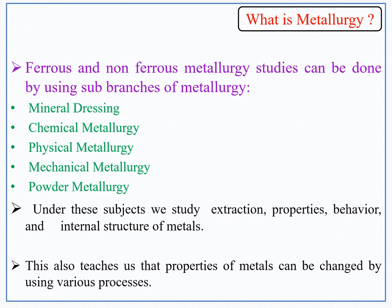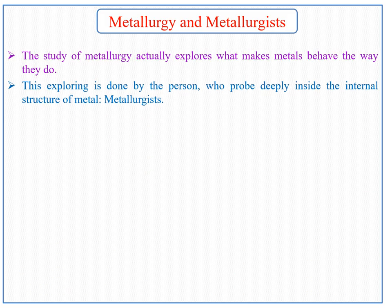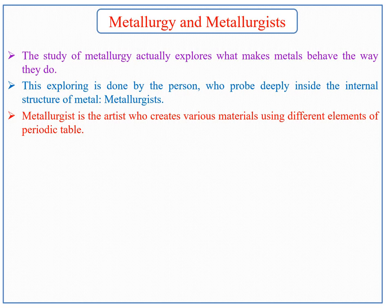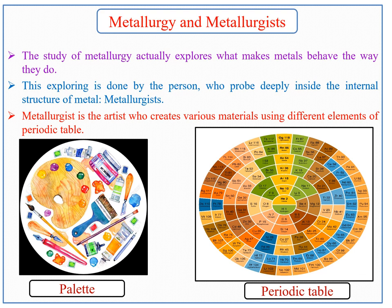These subjects also teach us that properties of metals can be changed using various processes. The study of metallurgy explores what makes metals behave the way they do. This exploring is done by a person who probes deeply inside the internal structure of metal, known as a metallurgist. A metallurgist is the artist who creates various materials using different elements of the periodic table — just as an artist creates different paintings with different colors, metallurgists create and improve materials using different elements and synthesis and processing routes. The principal goals of metallurgists are to make existing materials better and to invent or discover new phenomena and applications.